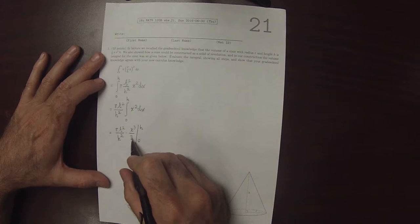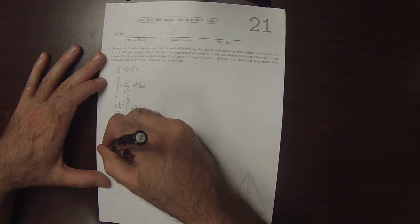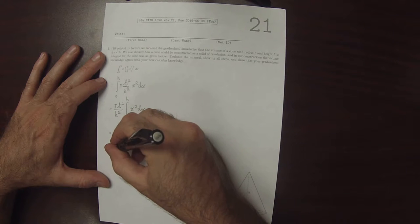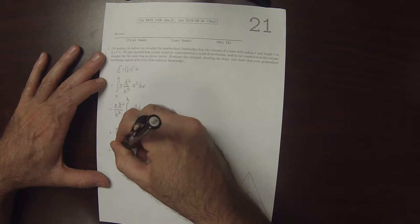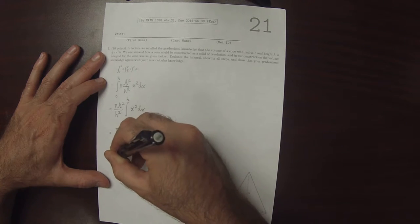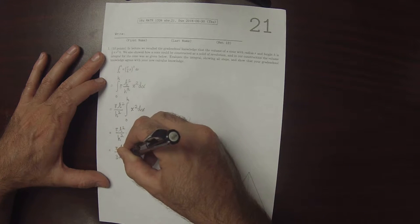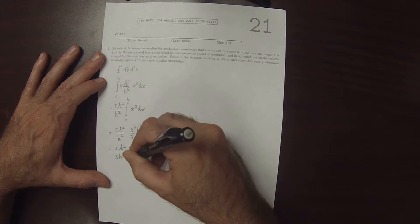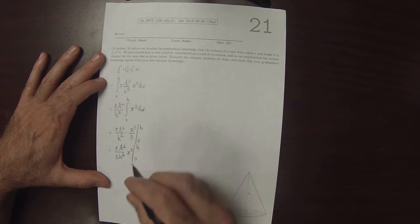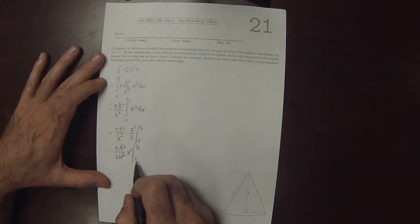Then we can factor out this 3 to get pi r squared over 3 h squared x cubed evaluated from 0 to h. So it's nice that one of the evaluation points is 0.